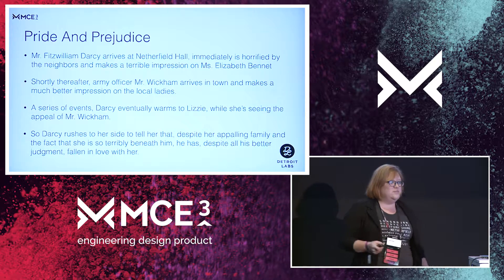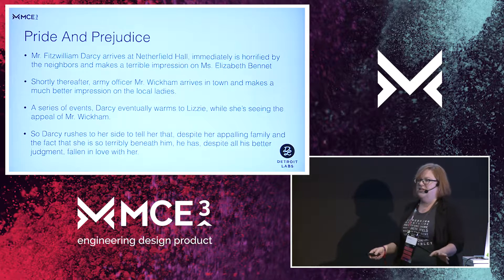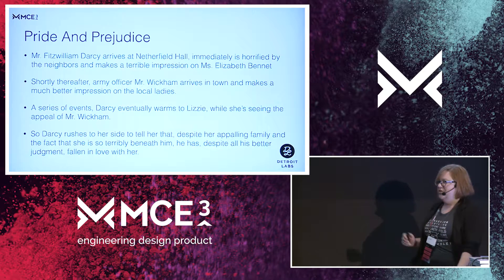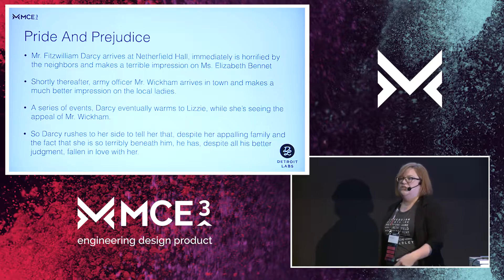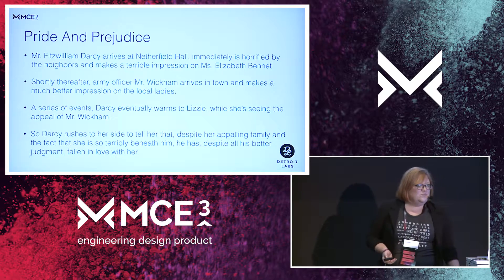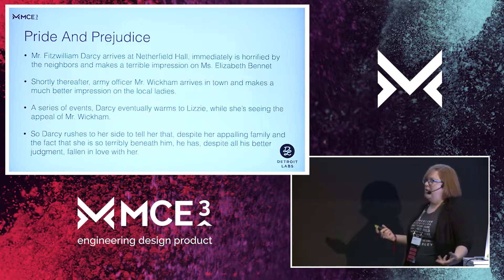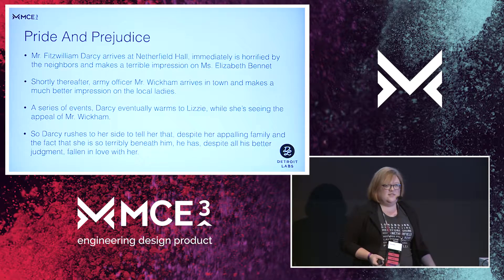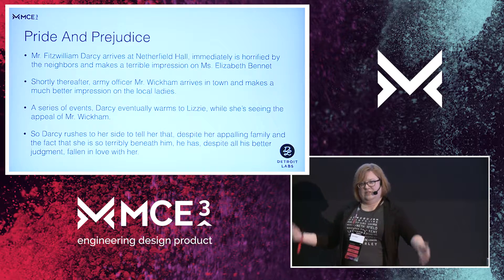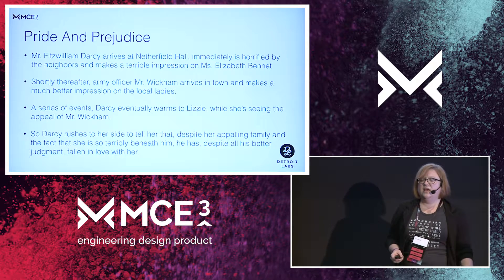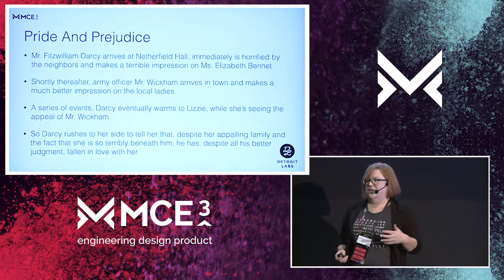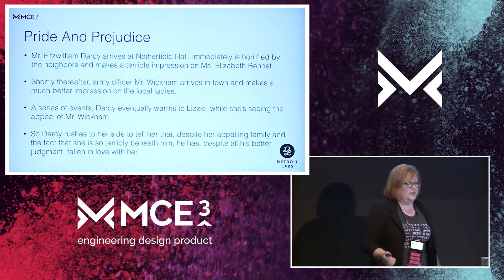Pride and Prejudice starts when Fitzwilliam Darcy shows up at Netherfield Hall and sort of immediately horrifies the neighbors, and then he is in turn horrified by them. He makes a particularly bad impression at a local ball on Miss Elizabeth Bennet, the second oldest of six Bennet sisters. Shortly thereafter, an army officer shows up who is much more charming and makes a much better impression on everyone. Darcy starts to warm up to Lizzie and takes a liking to her. She, in turn, takes a liking to Wickham, who seems to be a lot nicer. One day Darcy comes to her and says that even though her family is appalling and she's terribly socially beneath him, he's in love with her and they should get married. A little free tip: if you're ever declaring your undying love, don't lead with how they're embarrassing and awful. It didn't work out well for Darcy.